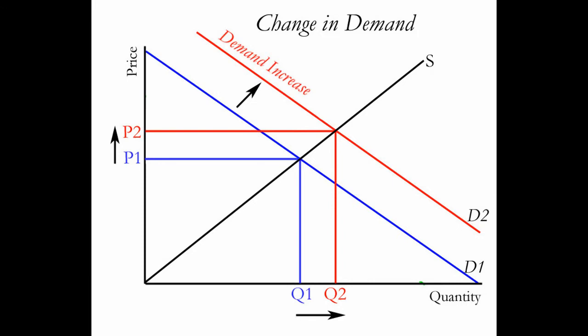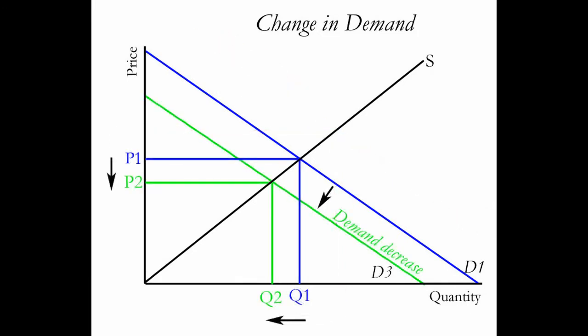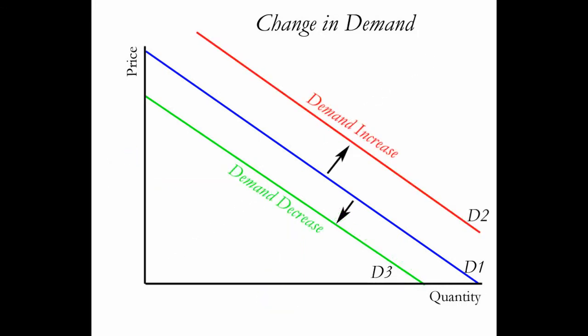A decrease in demand curve is a leftward shift from our starting blue demand curve D1 to the green curve D3. The result will be a decrease in the price a customer is willing to pay and a decrease in the quantity this consumer will be willing to buy.